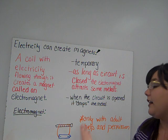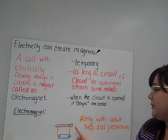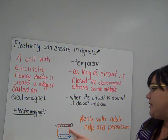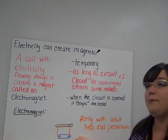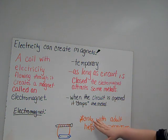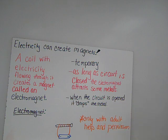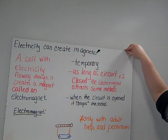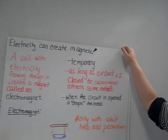You can create an electromagnet using a nail, some copper wire, and a battery. Remember, you only do things like this with adult help and permission. Ms. Kirchner will be making an electromagnet with us, so we're going to have lots of fun doing that.